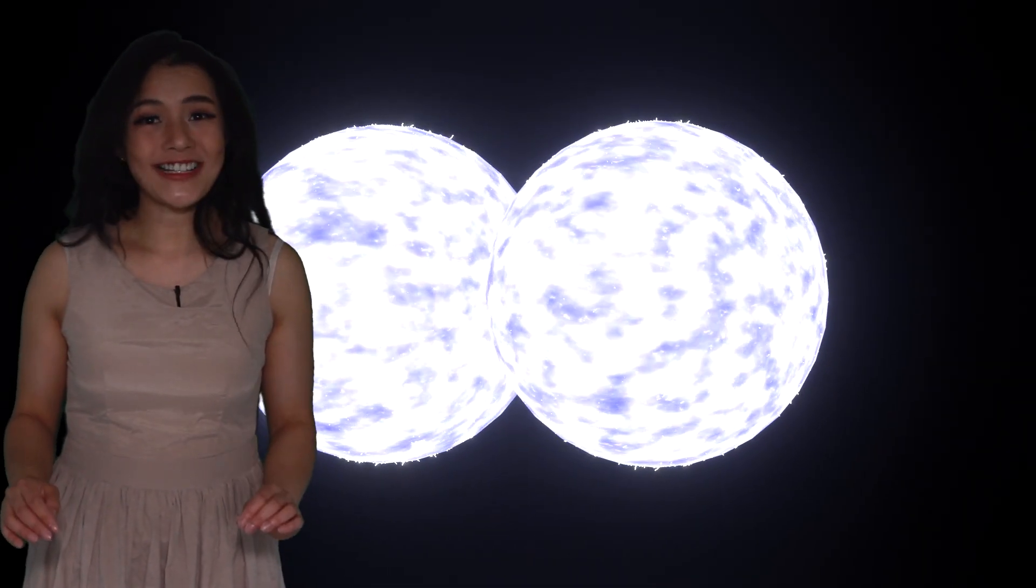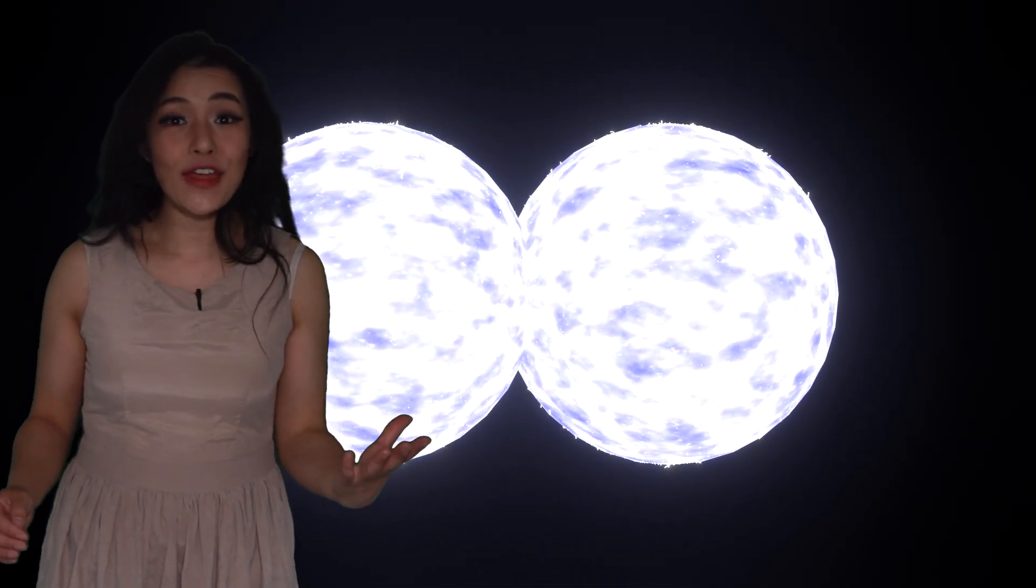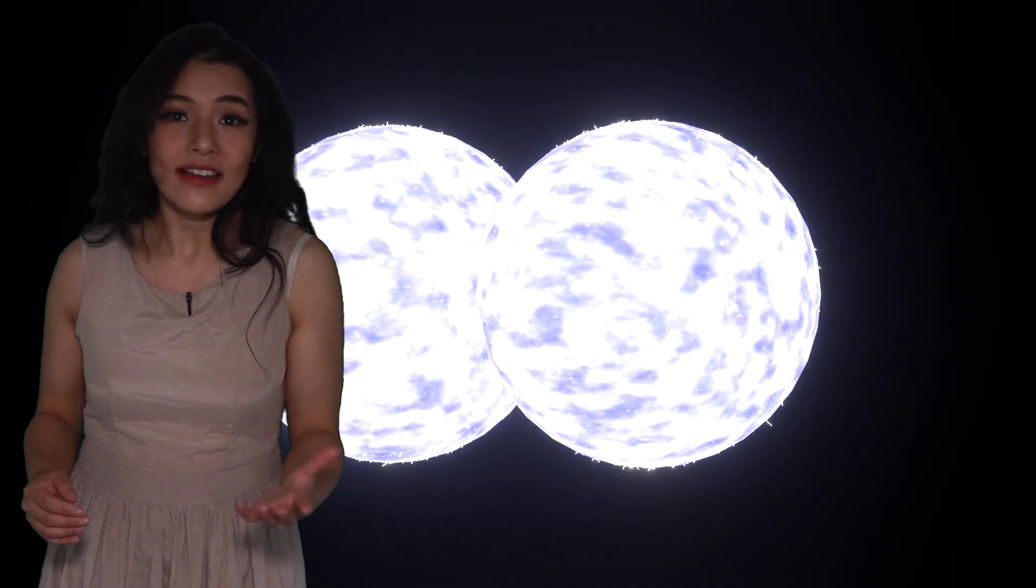Almost all known contact binaries are eclipsing binaries. That is to say that we observe them when they're in an orbital plane that is edge on. Since we observe the two stars almost along the line of sight, they undergo eclipses of one another.